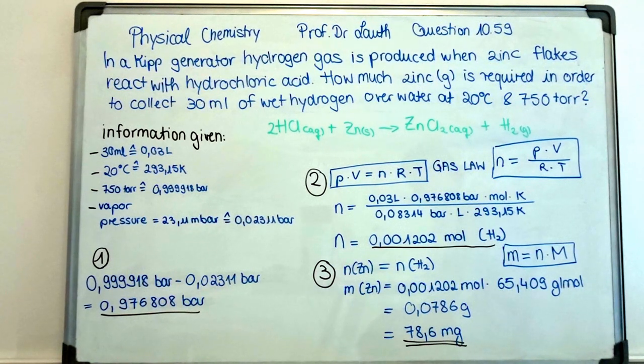After filling in the formula, we have a result of 0.001202 moles of hydrogen gas. Acting on the assumption of the reaction, we can write that the amount of substance of zinc is equal to the amount of substance of hydrogen.